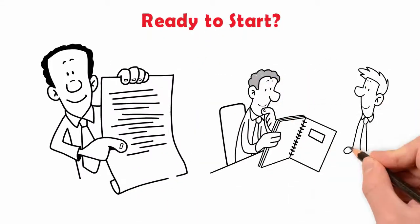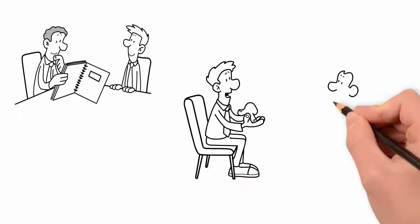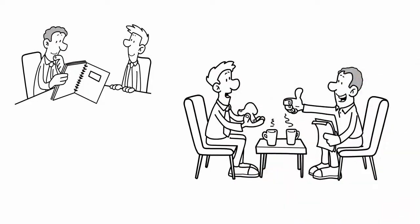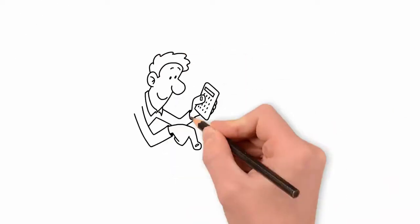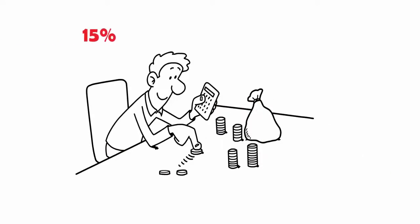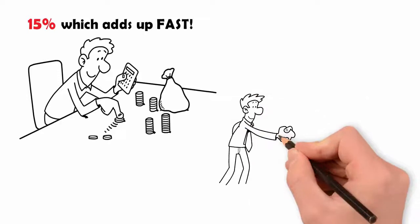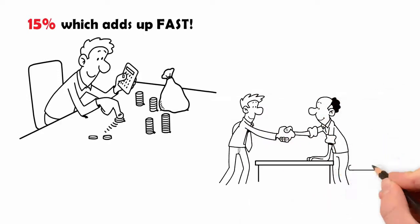We will analyze it, find where you are being overcharged, and show you the savings benefit you would have by processing with us. The average we save is 15%, which adds up fast.